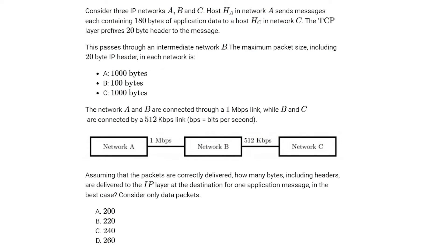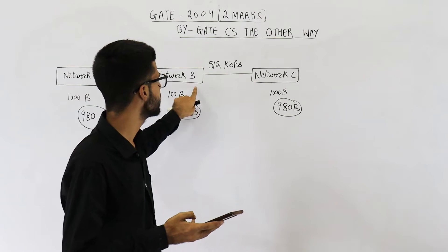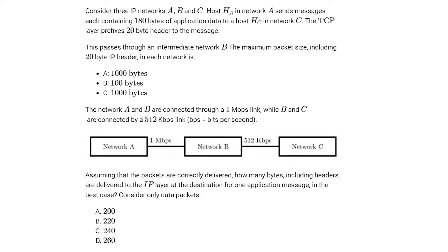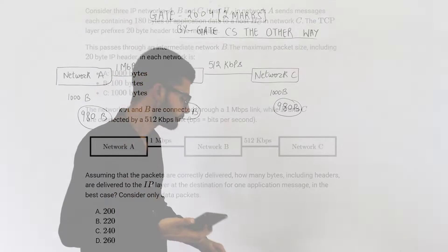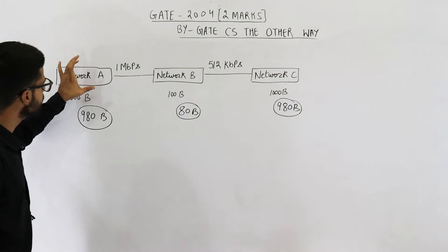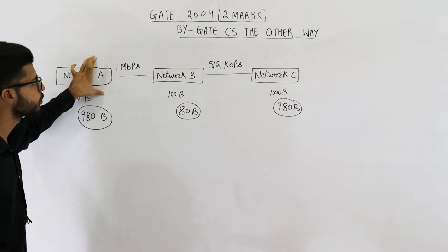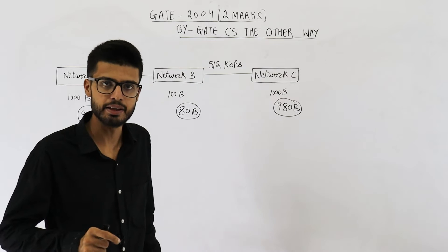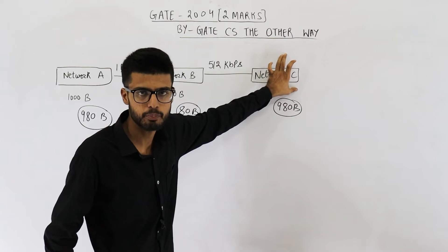Now the next lines of the question read: network A and B are connected through a 1 Mbps link, and the link between network B and C is 512 Kbps. Assume that the packets are correctly delivered. How many bytes including headers are delivered to the IP layer at destination for one application message in the best case? Consider only data packets.